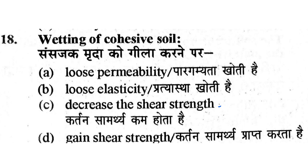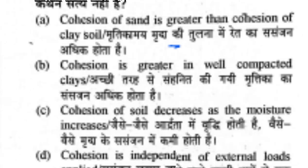Question number 18: Wetting of cohesive soil — what happens when cohesive soil becomes wet? Permeability decreases. As moisture increases in the soil, the shear strength capacity decreases. So option C — shear strength decreases — is the correct answer.